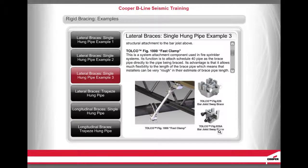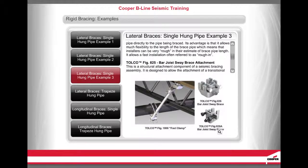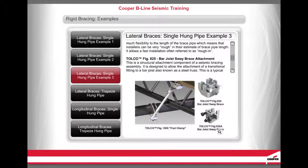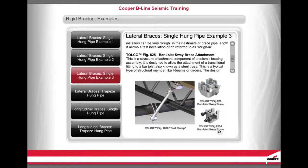The Tolco Figure 1000 Fast Clamp is a system attachment component used in fire sprinkler systems. Its function is to attach Schedule 40 pipe as the brace pipe directly to the pipe being braced. Its advantage is that it allows much flexibility in the length of the brace pipe, meaning installers can be very rough in their estimate of brace pipe length, allowing fast rough-in installation.